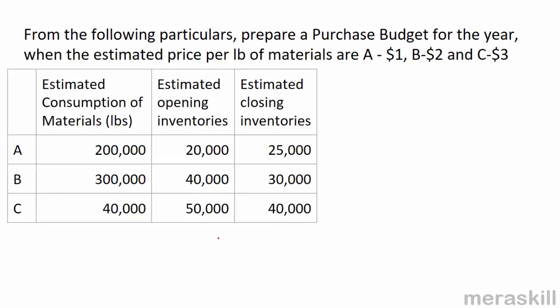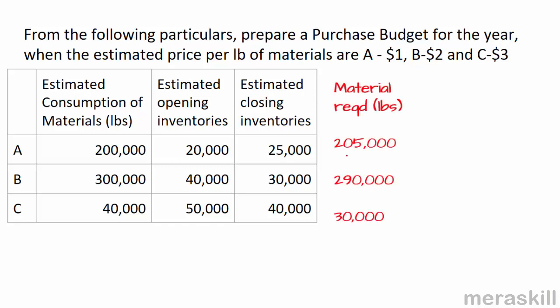For material A: consumption is 200,000, opening inventory is 20,000, and closing is 25,000. So the amount to be purchased is consumption plus closing minus opening inventories, giving 205,000 units of A. For B: 300,000 plus 30,000 minus 40,000 gives 290,000.